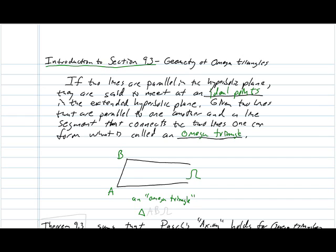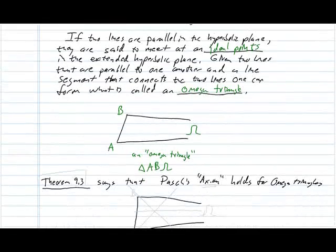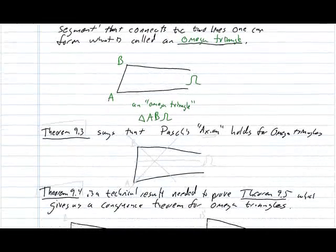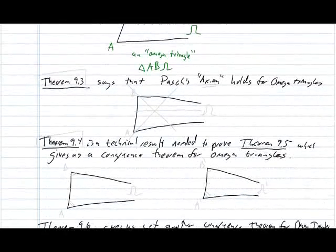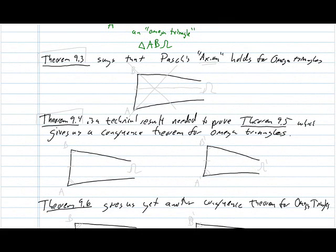And we're only using the extended hyperbolic plane insofar as we want to call this a triangle, even though it violates nearly everything we've come to know and love about what a triangle should be. But in this section we prove some interesting theorems about things we can say about these omega triangles, even though they aren't triangles in the way that we're usually used to thinking about them.